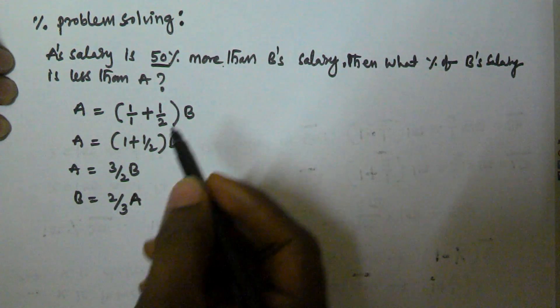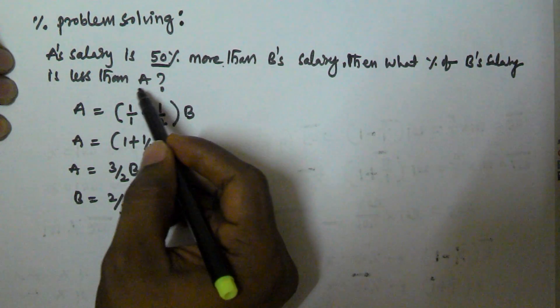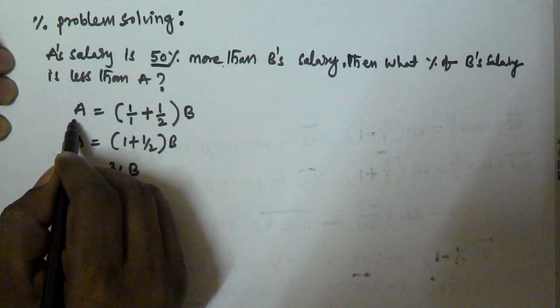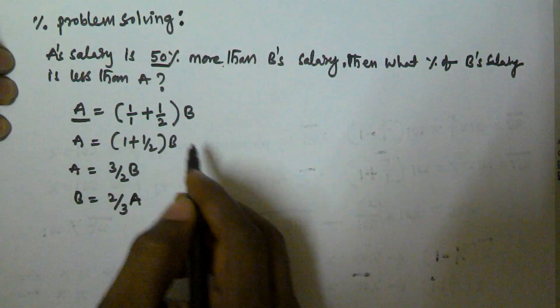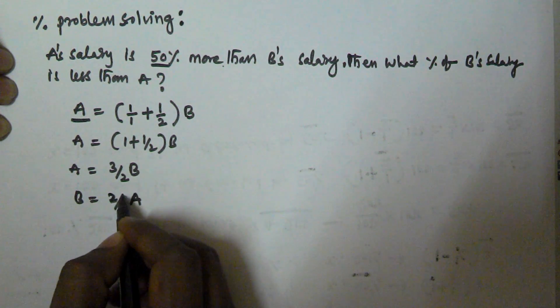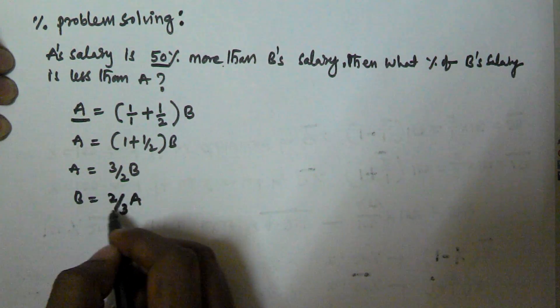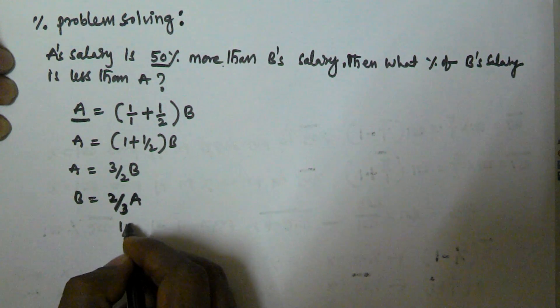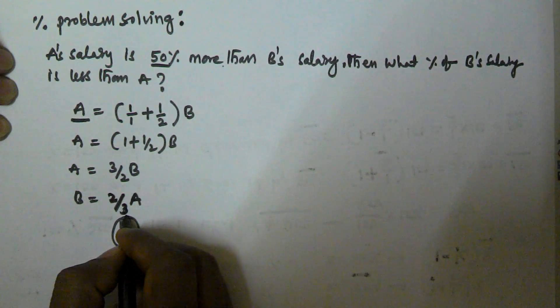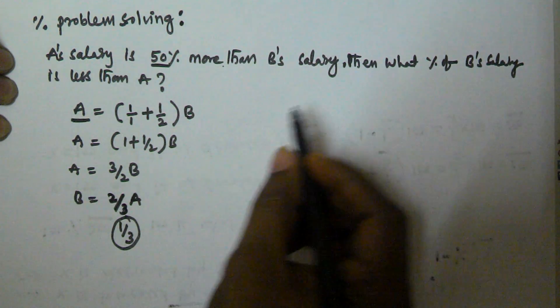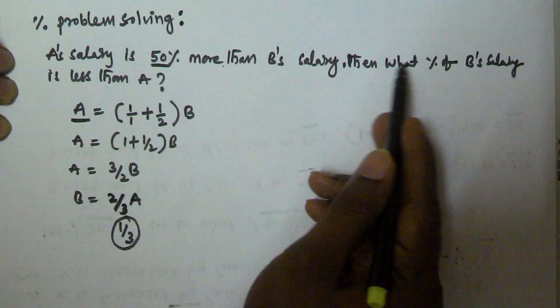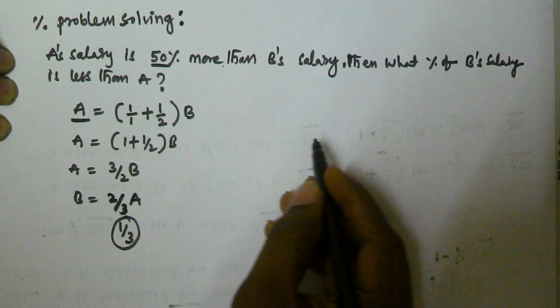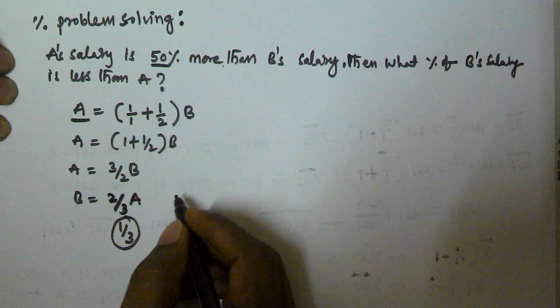So what percentage less than of A we have to find? Initially A is 100%, but here A is 2 by 3. So how much percentage is it reduced? That is 1 by 3 percentage is reduced. So that means B's salary is 33% less than A.